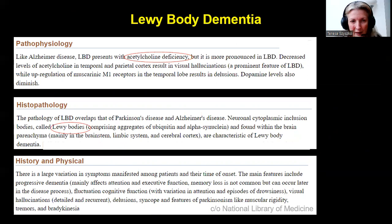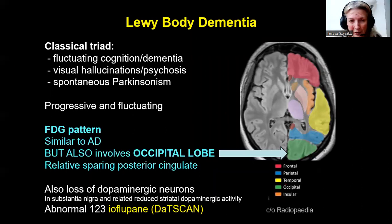Looking at Lewy body dementia: it presents with an acetylcholine deficiency, similar to what happens in Alzheimer's disease. However, you also have the deposition of Lewy bodies, which are unusual aggregates of protein found mainly in the brainstem and limbic system. It's a progressive dementia with fluctuating cognitive function. It usually presents with a classical triad of visual hallucinations, spontaneous Parkinsonism, and fluctuating cognition.